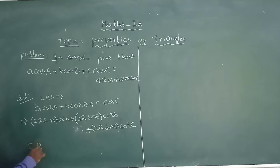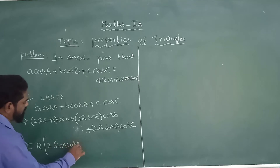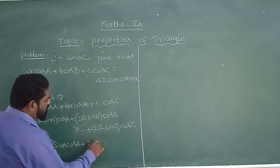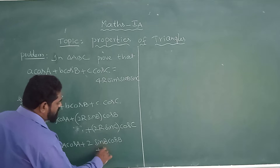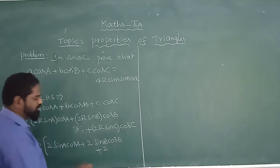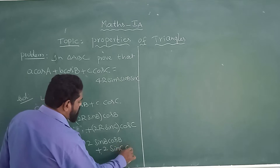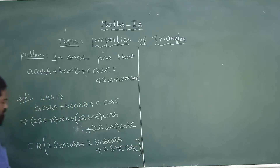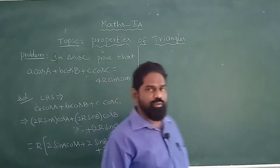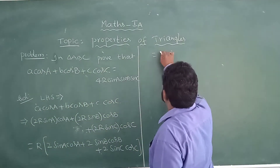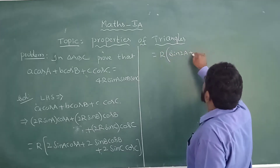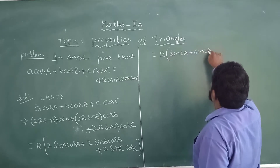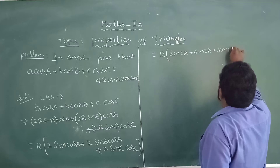What is common here? R gets common. So we have R times (2sinA·cosA + 2sinB·cosB + 2sinC·cosC). This can be taken as R(sin2A + sin2B + sin2C).